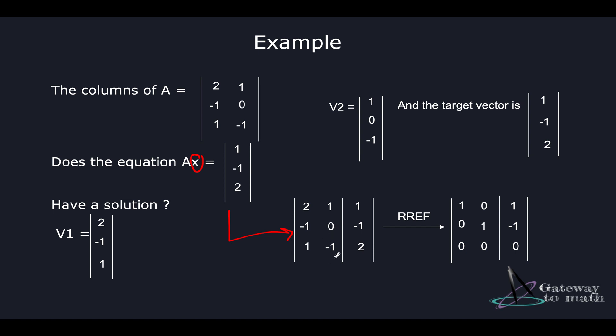Row reduced echelon form for this is here. Again, if anybody needs help as to how this was simplified to this structure, feel free to let me know in the comment section. The row reduced echelon form becomes this, and since we have 0 = 0 in this condition, it does have a solution.